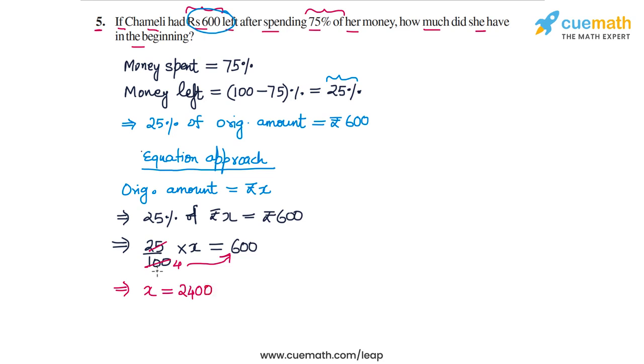The original amount that Chamelee had was Rs. 2400. She spent 75% of it. 75% of Rs. 2400 is Rs. 1800 and after that she was left with Rs. 25% or Rs. 600.